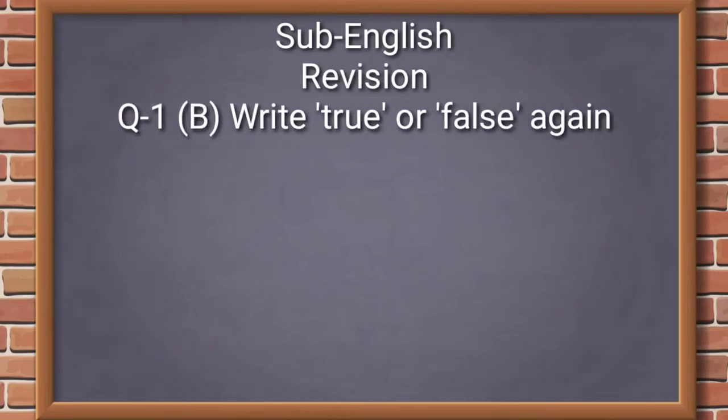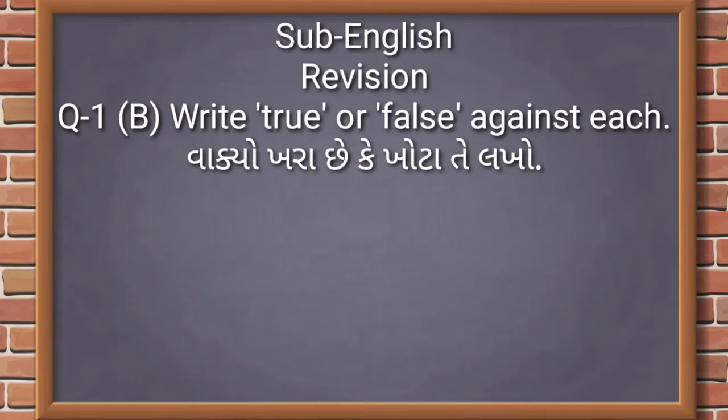Subject English, Revision. Question 1B: Write true or false against each sentence. Friends, based on the lesson, some sentences are given. Some sentences from the lesson are not okay. How many sentences are false? How many sentences are true? We will identify which sentences are true and which are false. Sentences from the lesson have been asked in a wrong way, so we will identify how many are correct and how many are wrong.